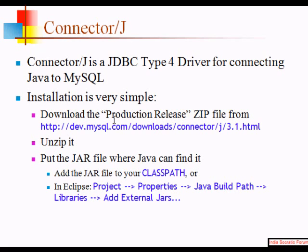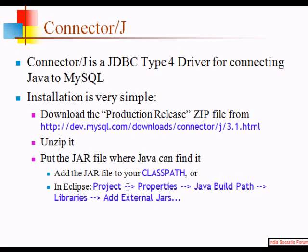Installation is very simple. Download the production release, then put the JAR file where Java can find it. Add the JAR file to the class path. If you use Eclipse, go to the project properties, then Java Build Path. Click Add External JARs and add this JAR file to it. This is how you configure the class path in Eclipse.